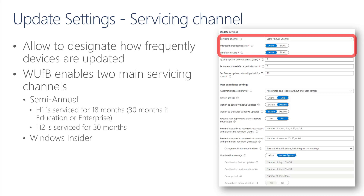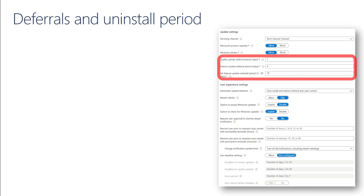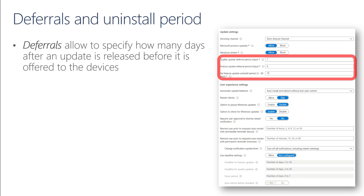From the update settings configuration of the Windows Update Ring, we can allow or block Microsoft product updates or Windows drivers. We also have the deferrals and uninstall period functionalities. With deferrals, we can specify how many days after an update is released by Microsoft before it is offered to devices. We can specify a deferral for both quality and feature updates — quality updates allow a deferral up to 30 days, and feature updates allow a deferral up to one year.